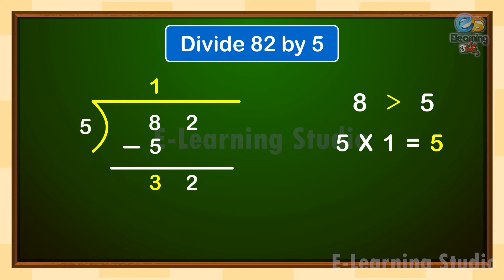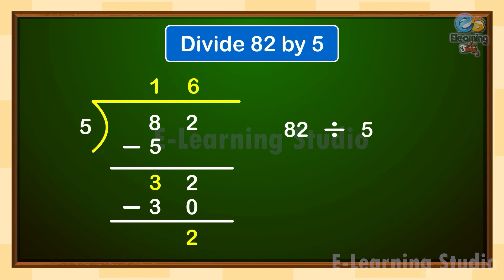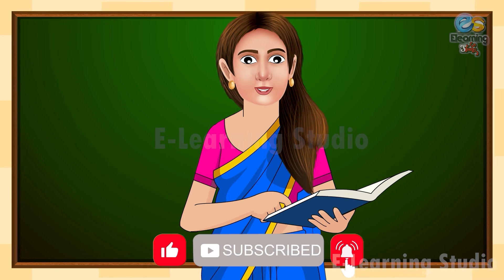5 goes into 32 six times. Write 6 as the second digit of the quotient on the top. Write the product — 5 sixes are 30 — below 32 and subtract to get 2. Now we cannot divide further. 82 divided by 5 is 16 with remainder 2. Remember, the remainder is always less than the divisor.